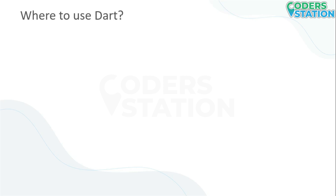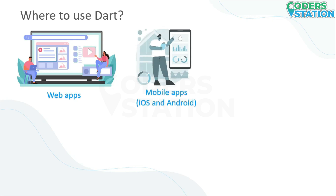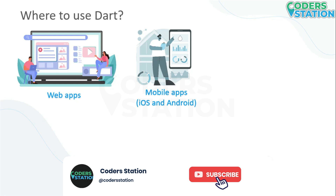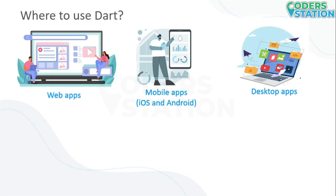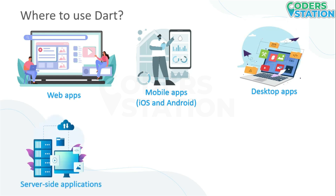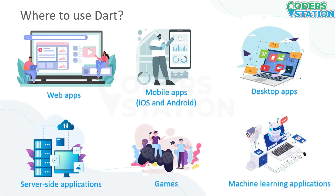Where to use DART? We can use DART while developing web applications. We can also use DART for creating mobile applications for iOS and Android. We can create desktop applications and server-side applications using DART as well. Even games can be developed using DART, and machine learning applications can also be developed using DART. DART is a versatile language that can be used to build a wide range of applications.